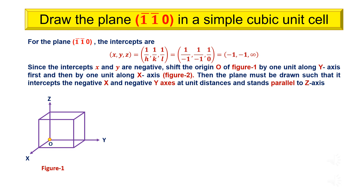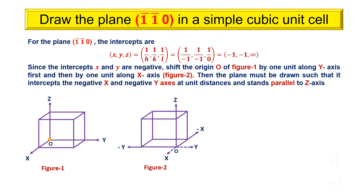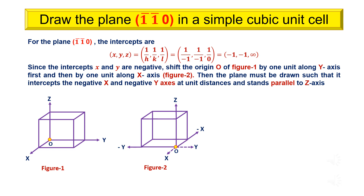For the plane (bar 1, bar 1, 0), the intercepts are x, y, z equals minus 1, minus 1, infinity. Since the intercepts x and y are negative, shift the origin of figure 1 by 1 unit along y-axis first and then by 1 unit along x-axis, as shown in figure 2. Then the plane must be drawn such that it intercepts the negative x and negative y-axis at unit distances and stands parallel to z-axis.